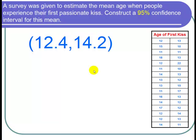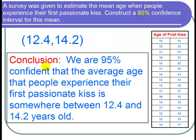So now I'm ready to state my conclusion. I can conclude that we are 95% confident that the average age that people experience their first passionate kiss is somewhere between 12.4 and 14.2 years old.